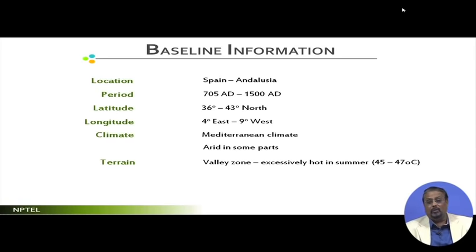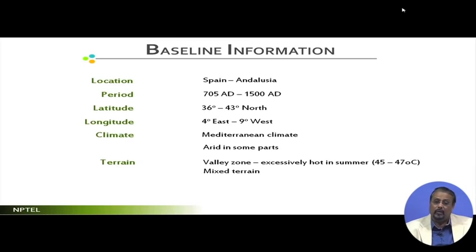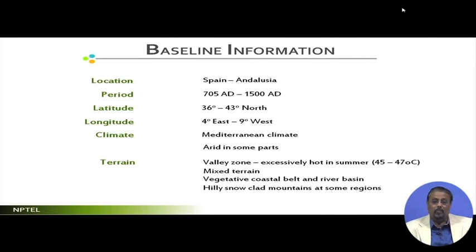The terrain includes valley zones that are excessively hot in summer, ranging up to 45–47°C. It is a mixed terrain with Mediterranean belts at lower regions, then hills and cliffs, vegetative coastal belts, and river basins. There are also hilly, snow-capped mountains in some regions, making it very varied. Importantly, this area has sufficient water — critical for landscapes — and water fountains or flowing water create very good micro-climatic conditions that the designers took advantage of.